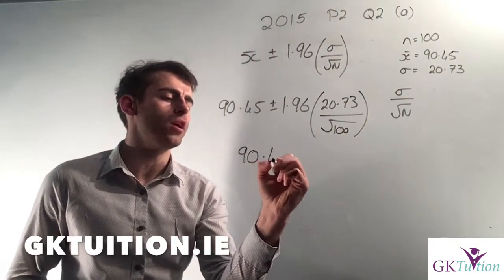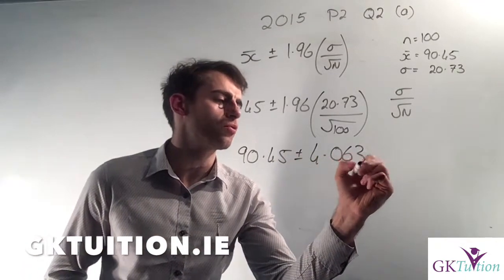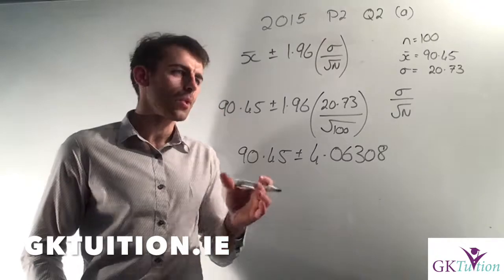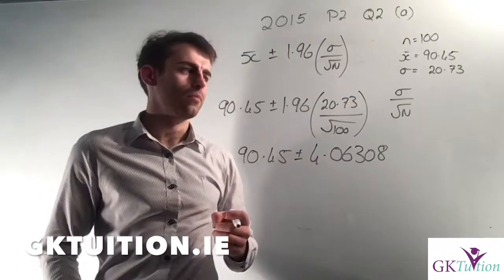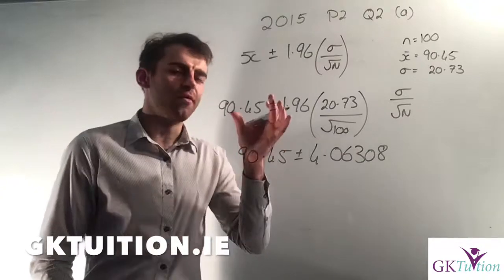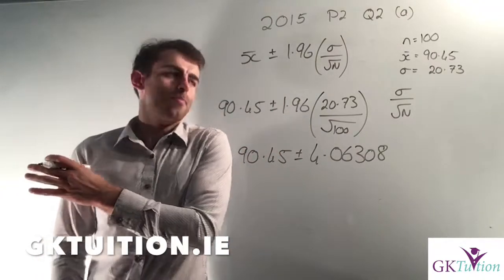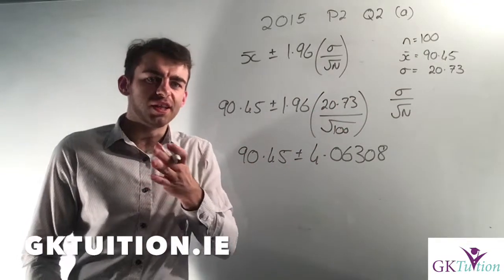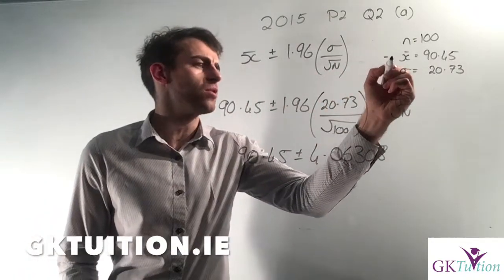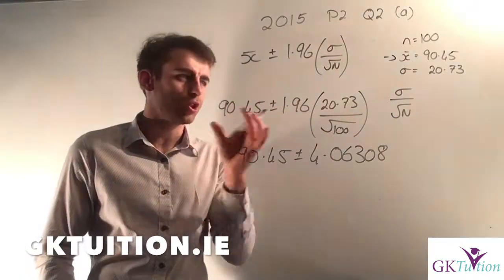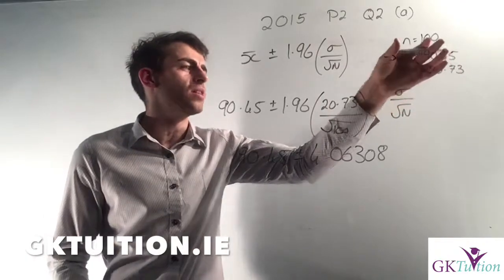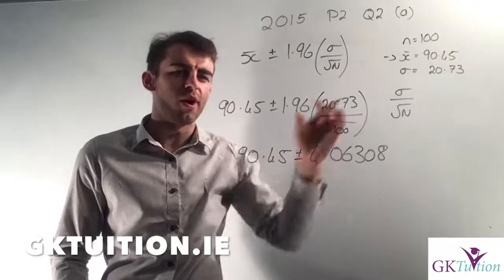Continuing on, I've got 90.45 plus or minus 4.06308. It's at this stage it's very important you understand what this figure represents. I surveyed 100 shoppers and their average was €90.45. But that average is not necessarily the average of every single person who did their shopping that Saturday. Perhaps the 100 people I surveyed actually spent a little bit more than the average, or perhaps a little bit less. So this figure does not represent the average of every single person who shopped in the supermarket that Saturday — it's just a fairly good indication.